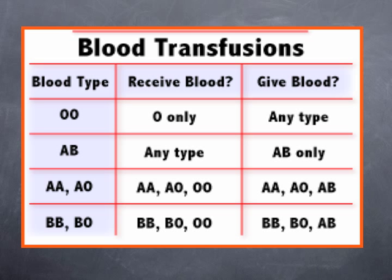Blood type A can receive blood from A or O, and can give blood to A or AB. Blood type B can receive from B or O, and can give blood to B or AB. We'll talk about the genotype notation — the O's, AA, and AO — in the next slide.